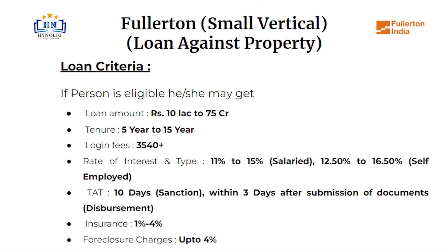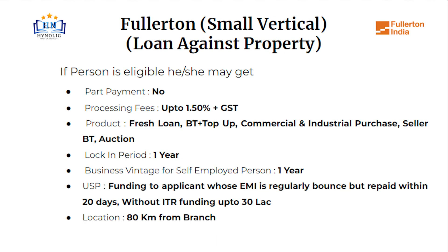Turnaround time is 10 days for sanction and within 3 days after submission of documents for disbursement. Insurance charges will be 1% to 4%. Foreclosure charges will be up to 4%, and part payment is not allowed. Processing fees will be up to 1.50% plus GST.